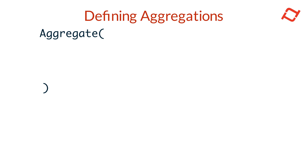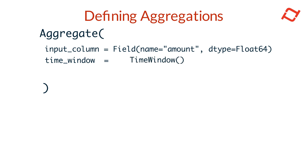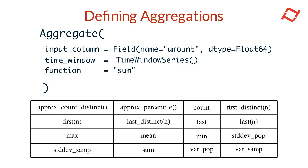Next, we will look at how to define an aggregation using the Tekton SDK. You can use the aggregate feature type to define aggregate features in Tekton. Each aggregate requires three fields: the input column that specifies the field to be aggregated, the time window to aggregate values over — which specifies the window boundary and can be a sliding window, lifetime window, or time window series — and finally the aggregation function to be applied on the values. Tekton's aggregation engine supports several aggregations out of the box.